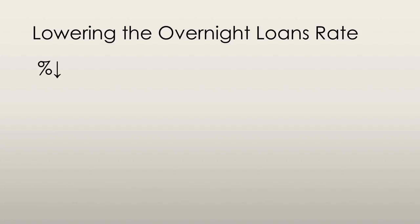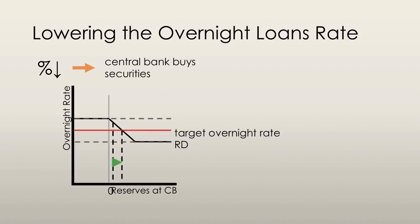In order to lower the overnight loans rate, the central bank first sets a new target, one which is lower than the current one. The central bank then conducts open market operations and buys securities from commercial banks. This puts downward pressure on the overnight loans rate.